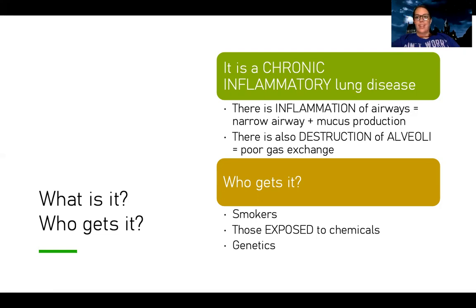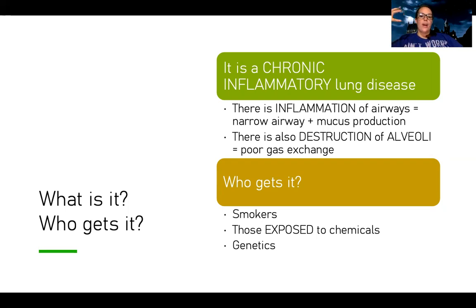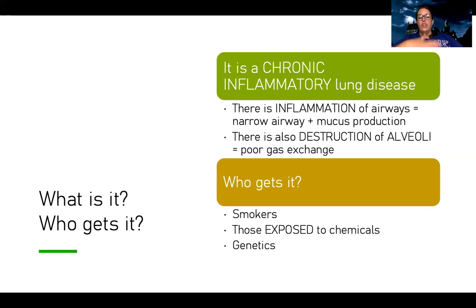Now that sounds familiar — that's a lot like asthma. But the thing that's different is there's also destruction of alveoli. All the way down at the bottom of our lungs, where all that gas exchange occurs — where we're exchanging oxygen for carbon dioxide — that area starts to get destructed. Oxygen can't get in and CO2 can't get out.